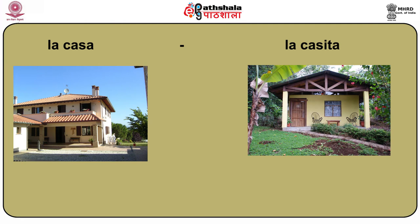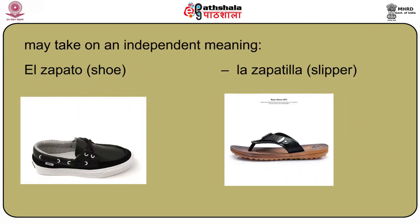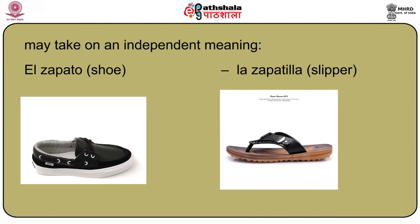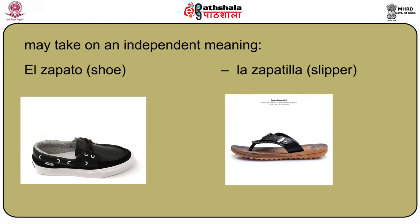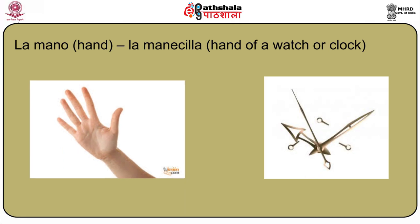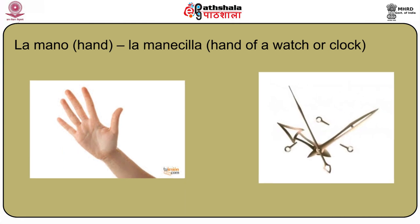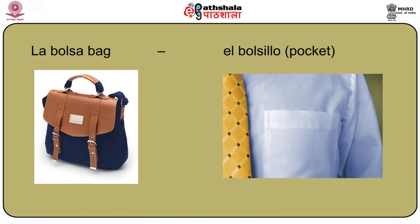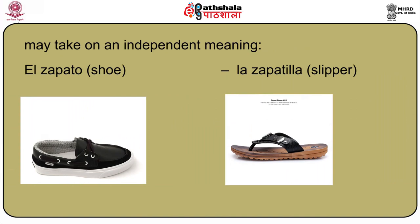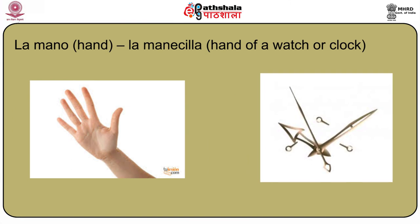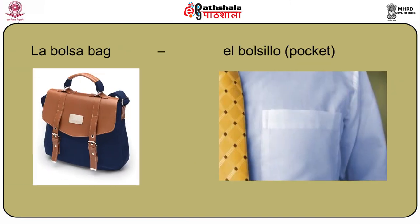Words with a diminutive suffix may take on an independent meaning. El zapato (shoe) becomes la zapatilla — not a diminutive in meaning, but 'slipper.' La mano (hand) becomes la manecilla — the hand of a watch or clock. La bolsa (a big bag) turns into el bolsillo, meaning 'pocket.' So zapato is shoe, zapatilla is slipper; mano is hand, manecilla is the hand of a watch; bolsa is bag and bolsillo is pocket. Be careful not to confuse these with regular diminutives.